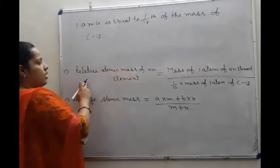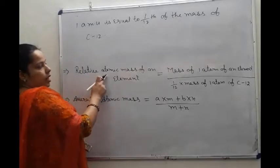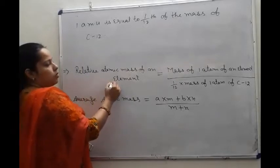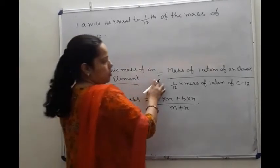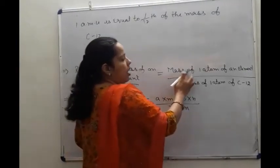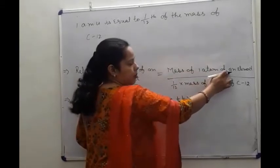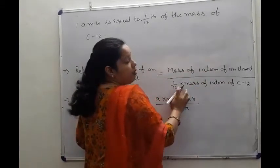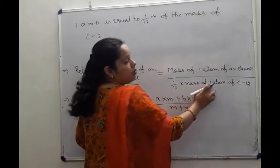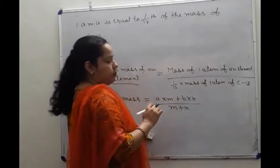Next is the relative atomic mass. The relative atomic mass of an element is the ratio of the mass of one atom of that element divided by 1/12th of the mass of one atom of carbon-12.